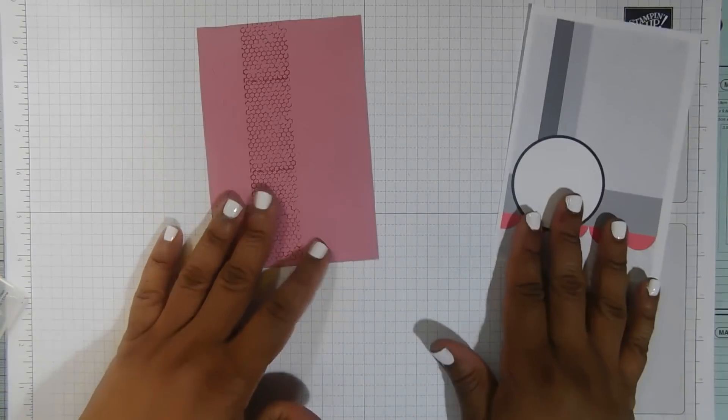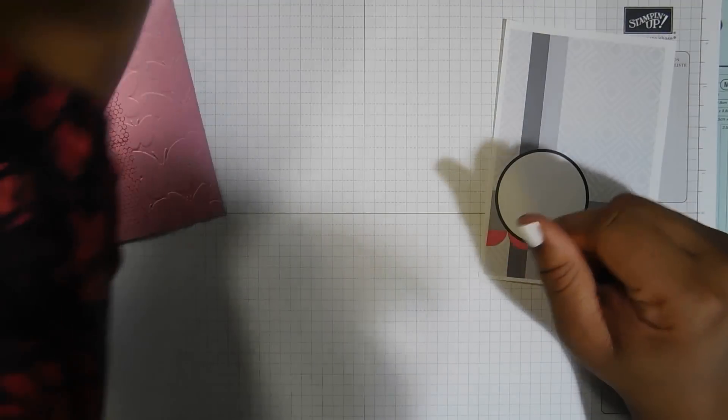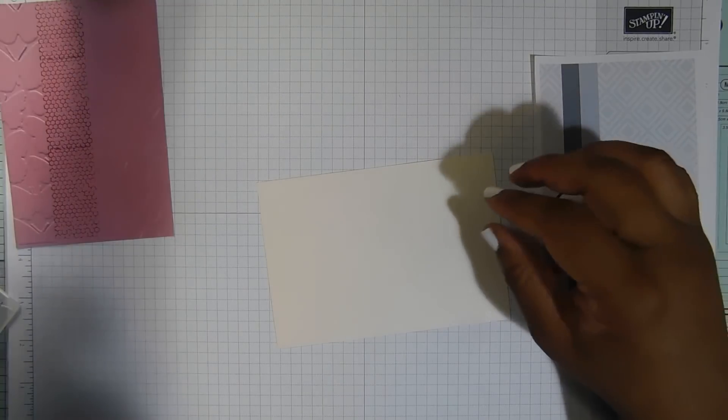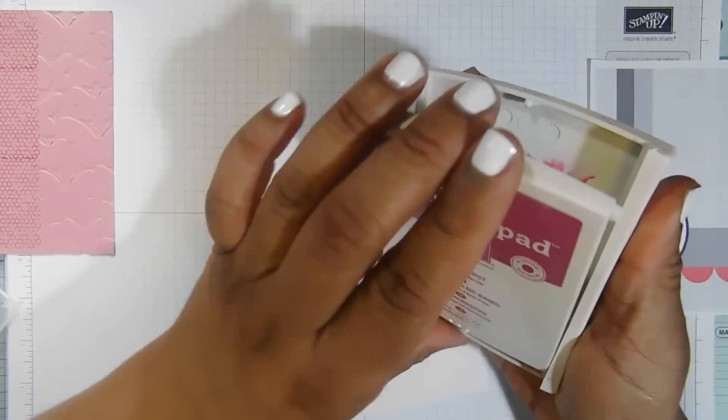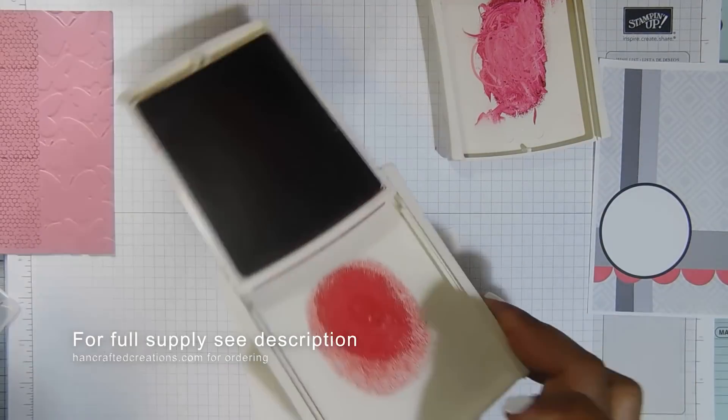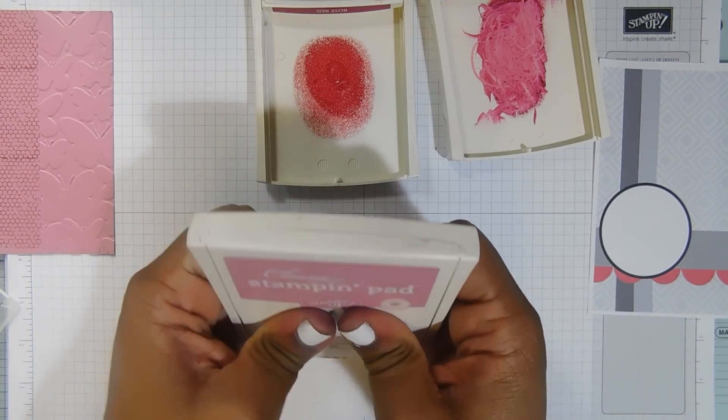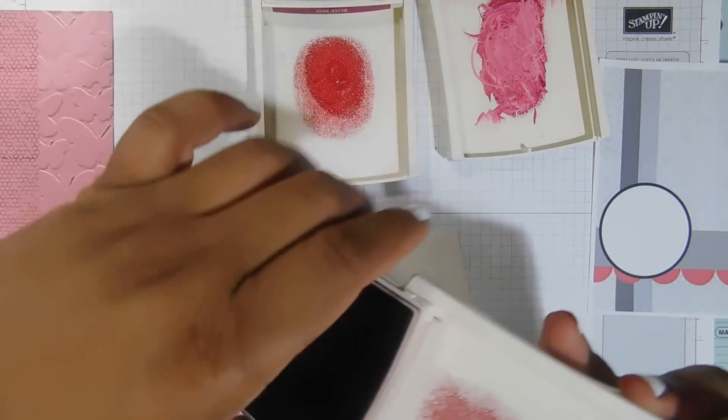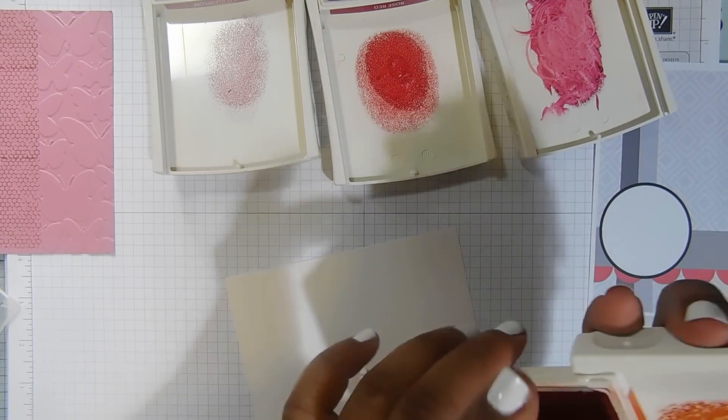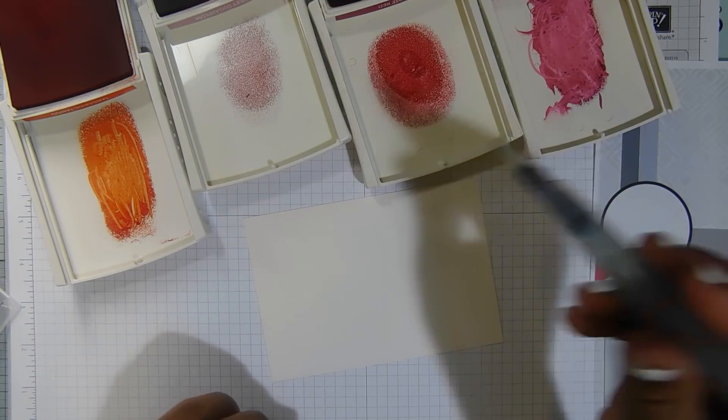Okay, so we've got the background and this stripe bit done. For the focal image, I'm going to use some shimmer paper and I'm just going to put some colour down on there. So I've got the berry burst and a bit of rose red, a little sweet sugar plum, and just a touch of tangerine tango. So all I'm going to do is give it a bit of a colour wash and then die cut out of it.